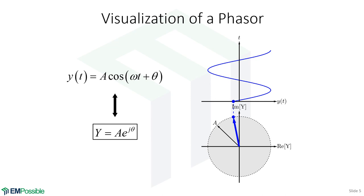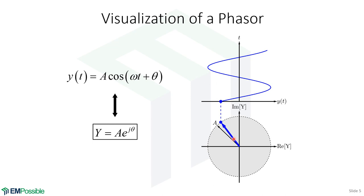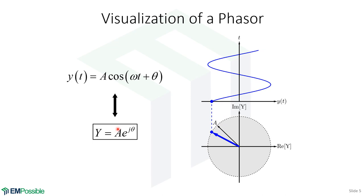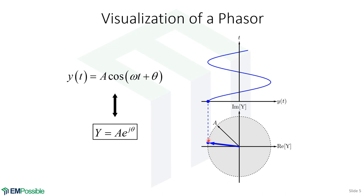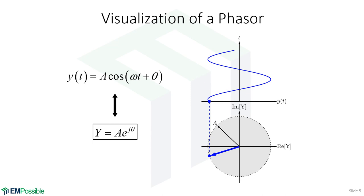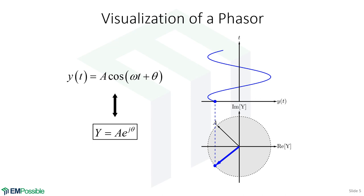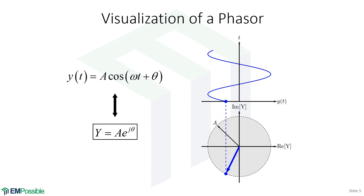With a phasor, we add information. Rather than just a single point going back and forth, we think of it as a vector spinning along a circle. The radius of this circle — the length of that vector — is A, the original magnitude. The horizontal position of where the vector reaches the circle is our original y function, but now there's also a vertical position. A phasor contains more information than the original function — that is artificial, fake information added to make our calculations much easier for harmonically oscillating things.